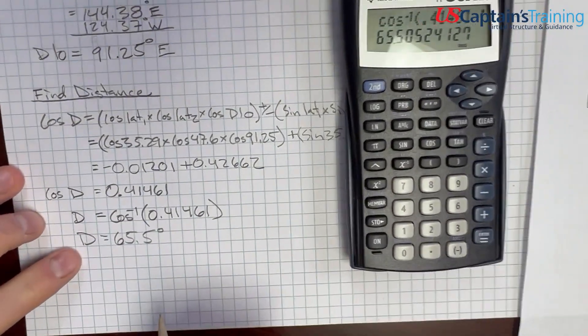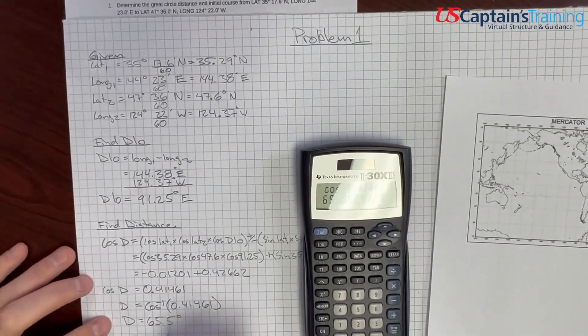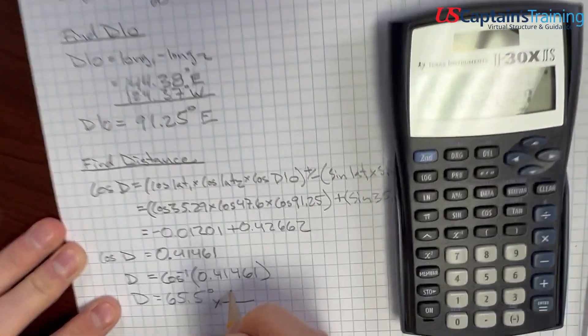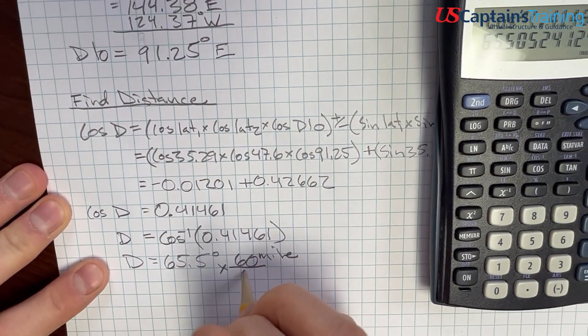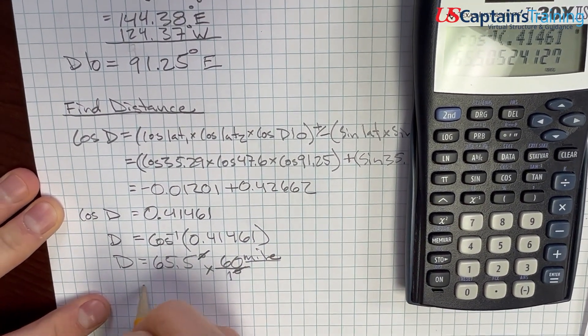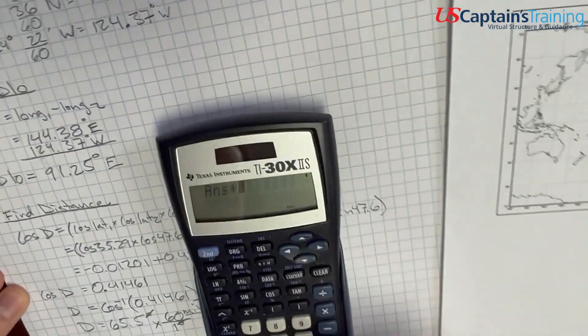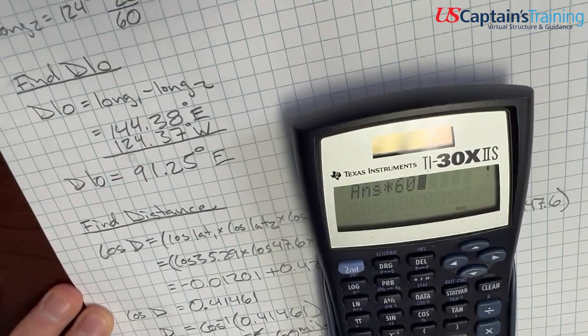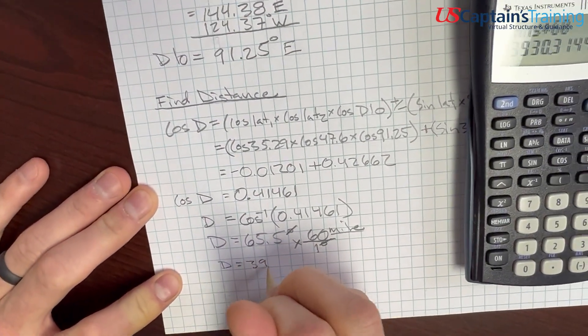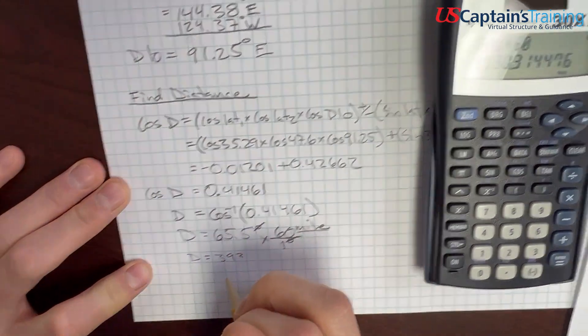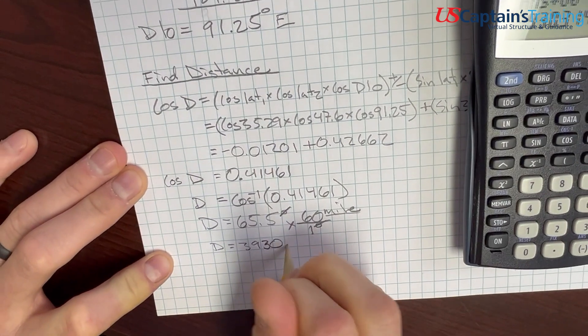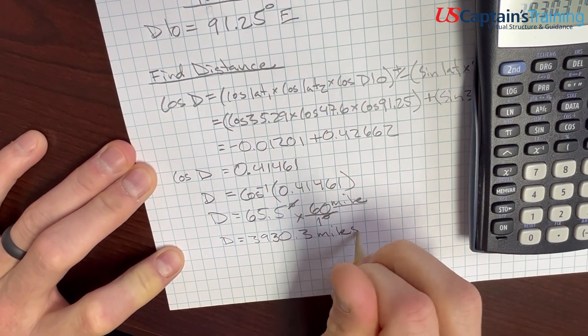So, the distance is equal to 65.5 degrees. Now, we need to get it into miles, because in our answer, it's miles. So, we're in degrees, we need to get to miles. You times by 60 miles per one degree. The degrees cancel, you're left with miles. So, 65.5 times 60 equals 3930.3. So, distance equals 3930.3 miles.